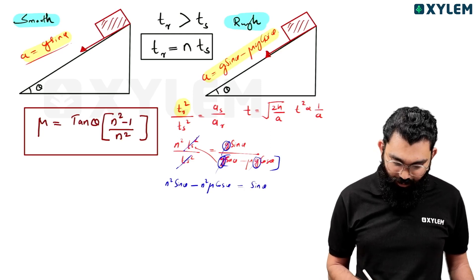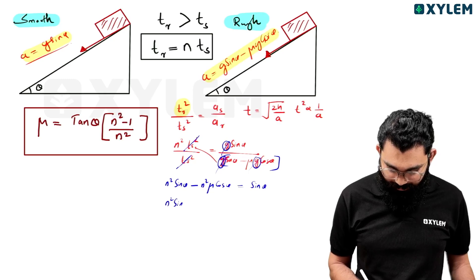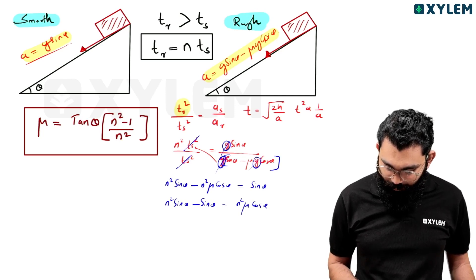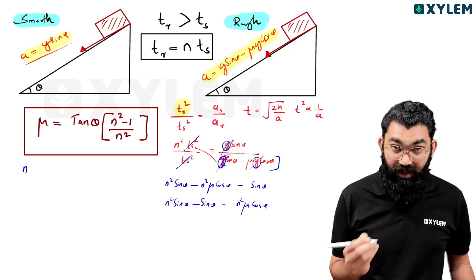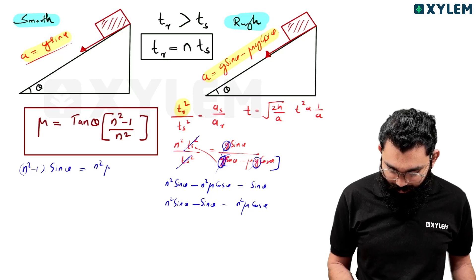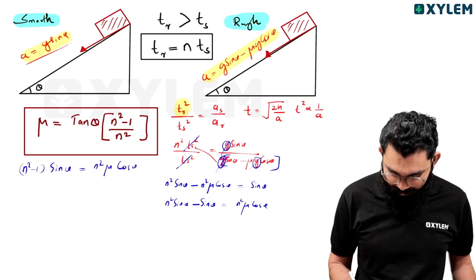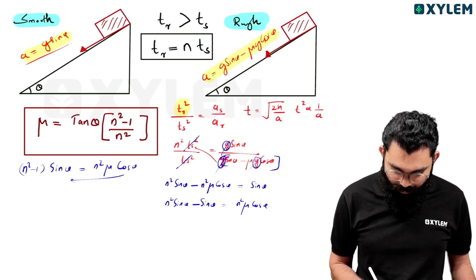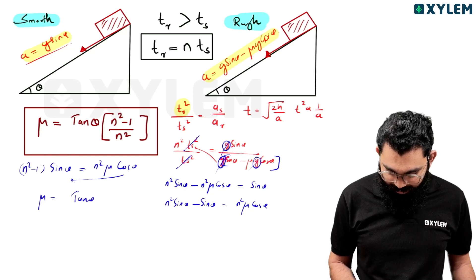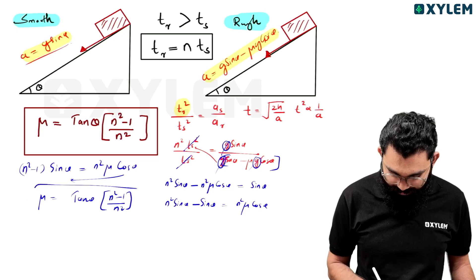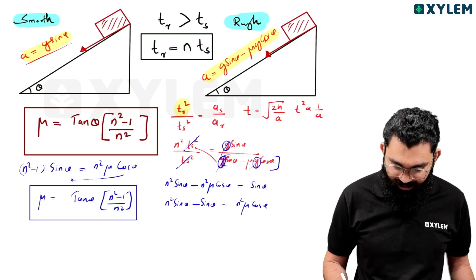After canceling, n² equals sin θ divided by (sin θ minus μ cos θ). Rearranging: n²(sin θ minus μ cos θ) equals sin θ. So n² sin θ minus n² μ cos θ equals sin θ, giving (n² minus 1) sin θ equals n² μ cos θ. Dividing, we get μ equals tan θ times (n² minus 1) divided by n².